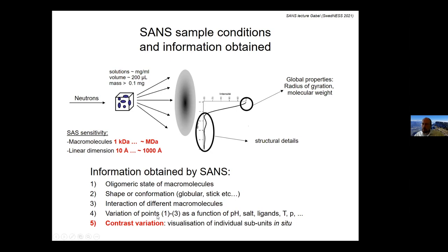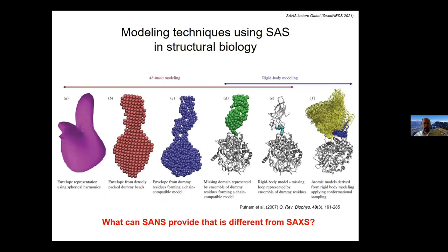An important point for neutrons — more so than for x-rays — is so-called contrast variation, which allows you, in a complex system composed of several partners, to focus on the signal of individual partners. Globally, beyond molecular mass or radius of gyration, there is also modelling. I won't go into too much detail now; I'll show you the practical examples later.